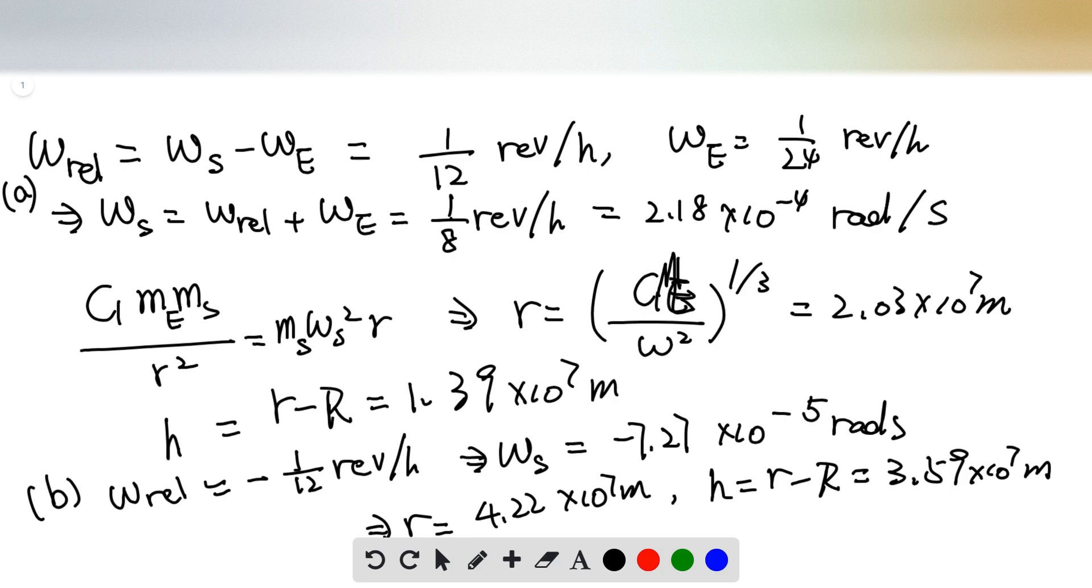Plug in the numbers. You can know that it's equal to 2.03 times 10 to the 7 meters. Remember, this is the distance between the satellite and the center of the Earth.